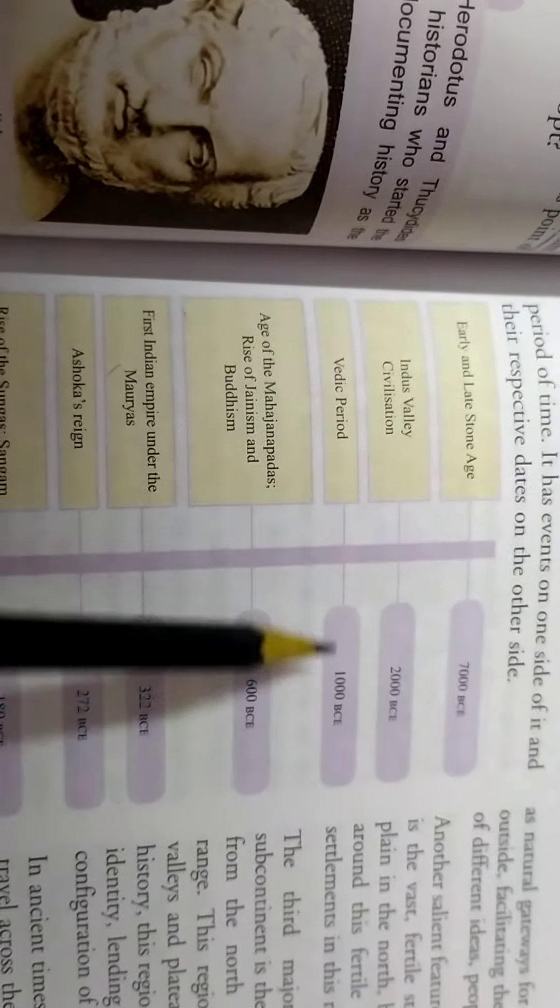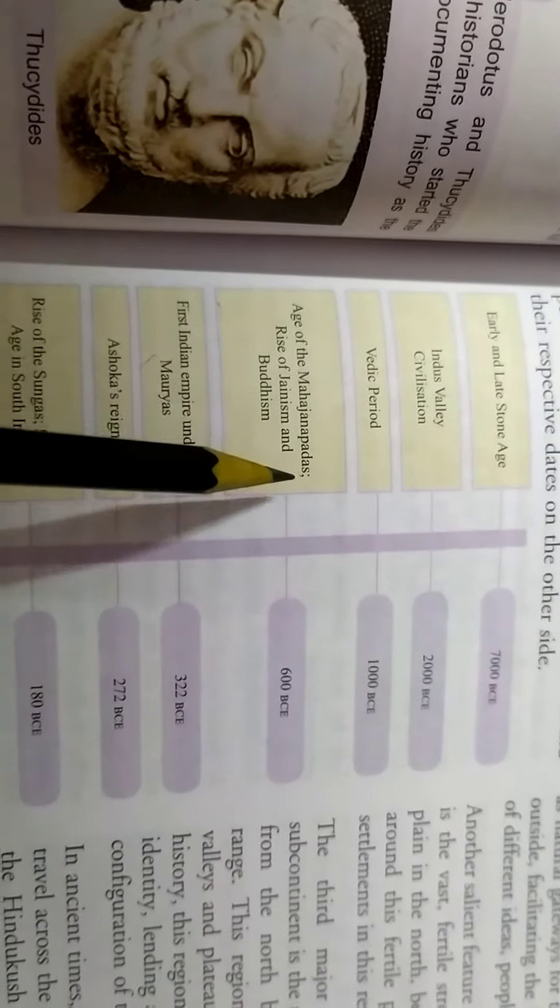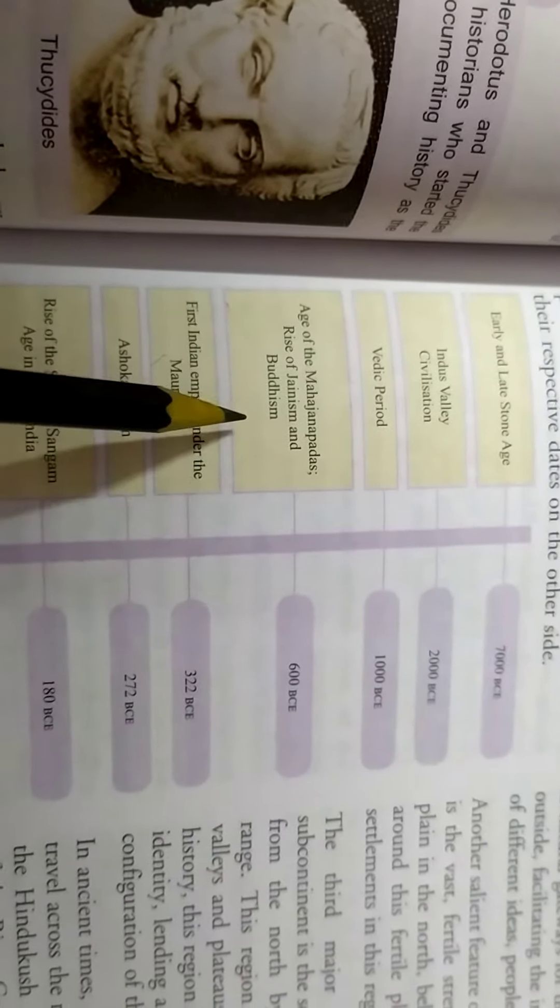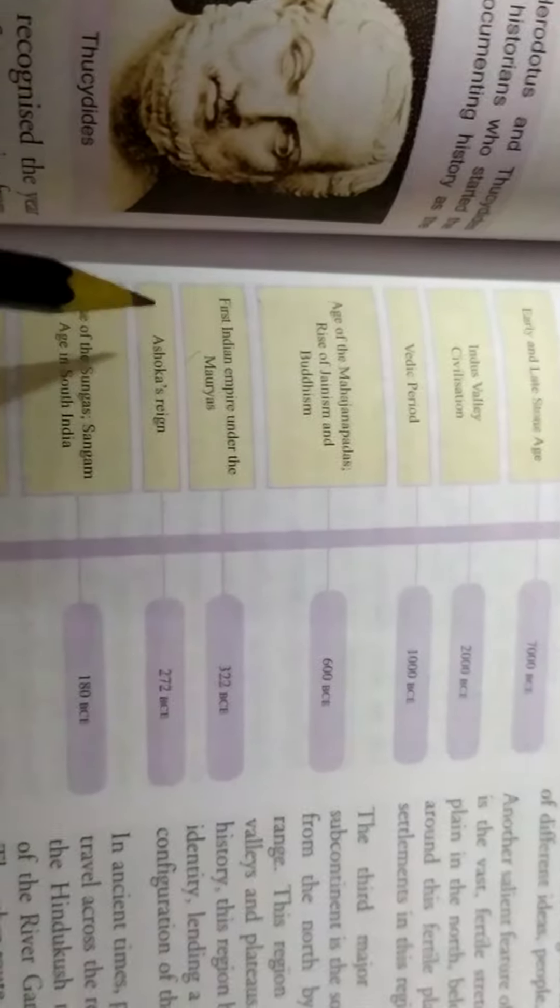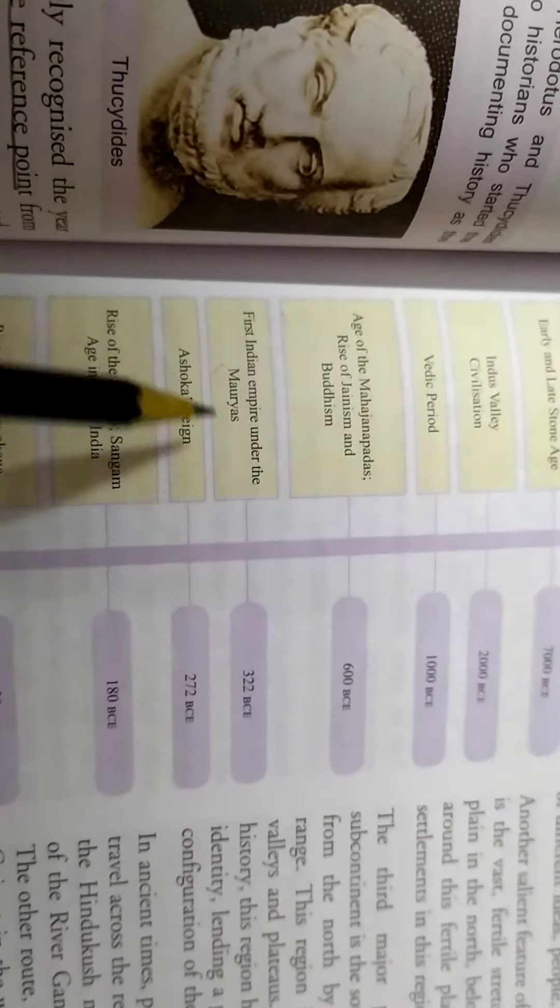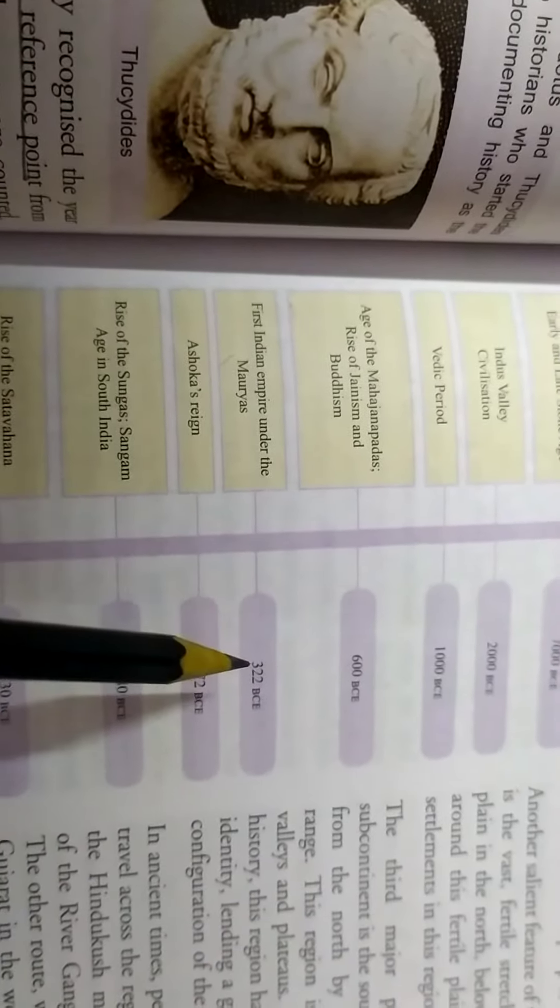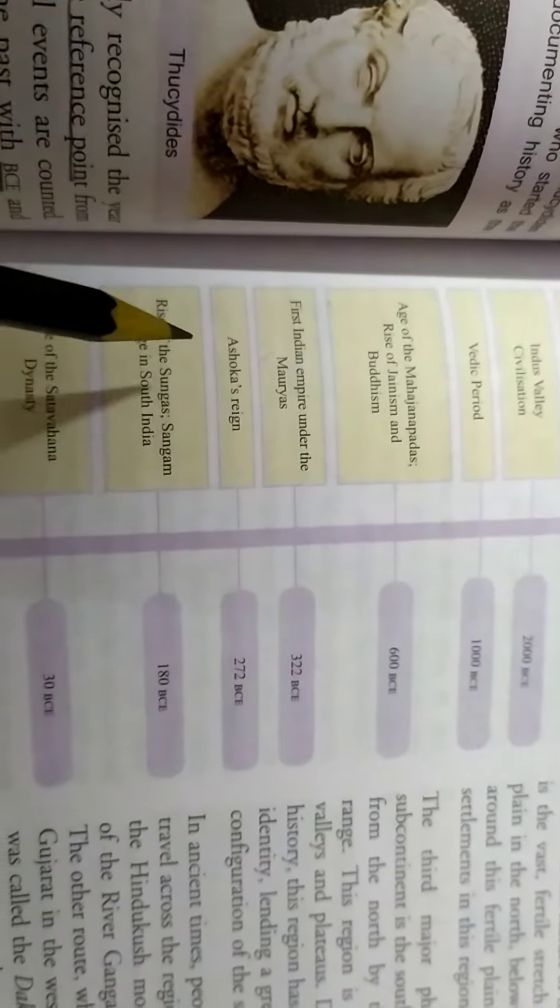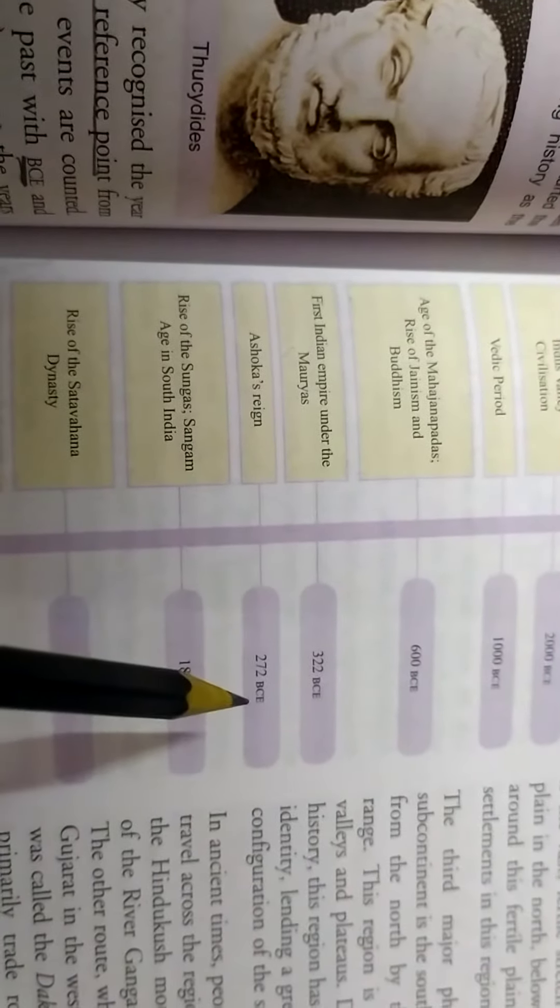Vedic period 1000 BCE. Age of Mahajanapadas, rise of Jainism and Buddhism 600 BCE. First Indian Empire under the Mauryas, 322 BCE. Ashoka's reign, 272 BCE.